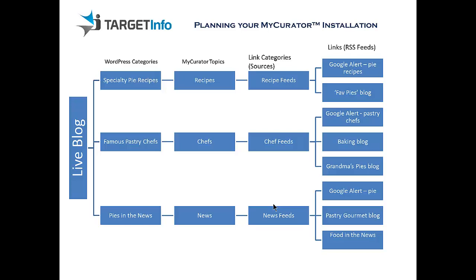A final note: if you are planning for a lot of topics, you can actually be more creative in using your sources. You can have two link category sources used by one topic, and a feed can be part of multiple link category sources. In reusing categories and feeds, you may find duplicate articles. MyCurator only checks for duplicates within a topic, so an article could be appropriate for two topics and show up twice on the training page.